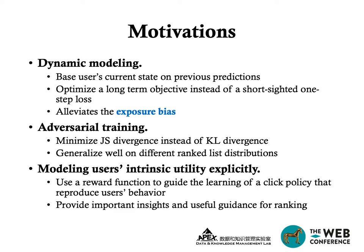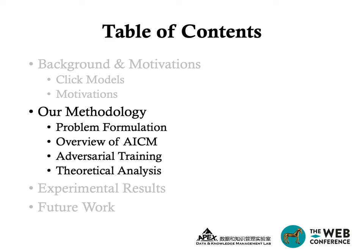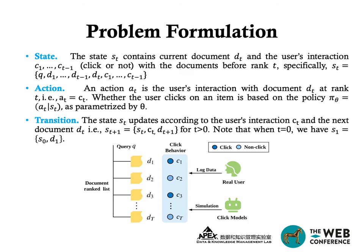After background and motivations, we introduce our method in detail. We formulate the click model as a sequential decision-making process. The state S_T contains the current document, previous document, and previous user interactions. The action A_T is the user's interaction with the current document, also defined as C_T. The state updates according to the user's interaction C_T and next document D_T.